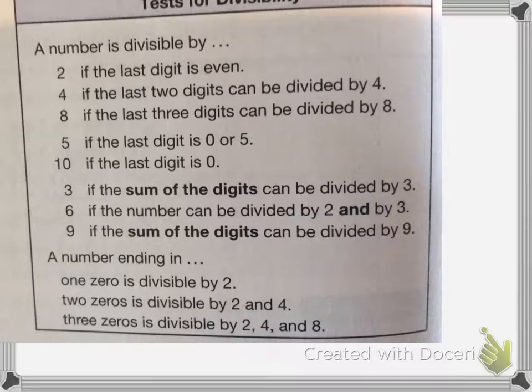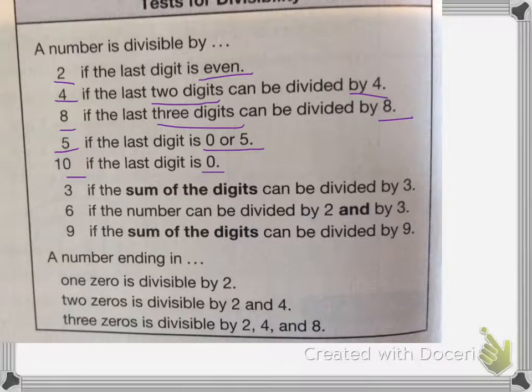This next part is divisibility, and it's just to see what numbers can be divided by. And there's just a chart here to help you out with that. So a number is divisible by 2 if the digit is even. 4 if the last 2 digits can be divided by 4. 8 if the last 3 digits can be divided by 8. 5 if the last digit is 0 or 5. 10 if the last digit is 0.